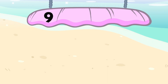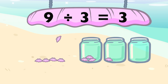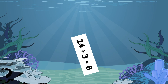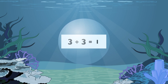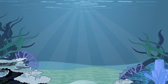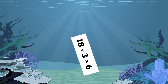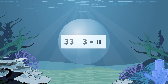9 divided by 3 equals 3. 24 divided by 3 equals 8. 3 divided by 3 equals 1. 18 divided by 3 equals 6. 33 divided by 3 equals 11.